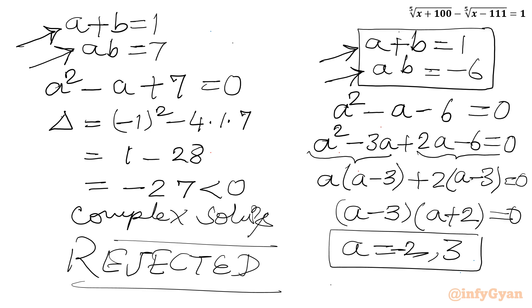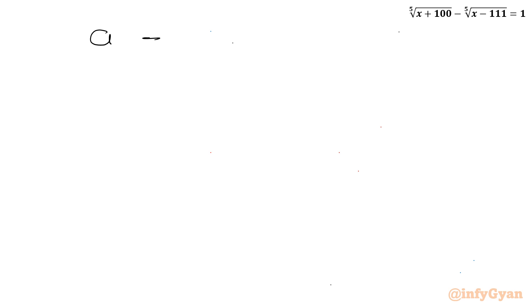Factoring gives A equals negative 2 and A equals 3.